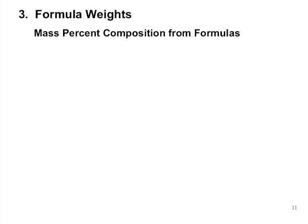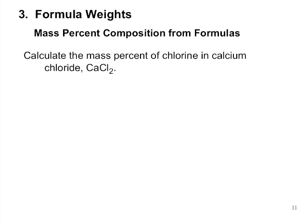So really all you need to know here is the concept of a fraction, in this case a mass fraction. Here you're asked to calculate the mass percent of chlorine in CaCl2 or calcium chloride. So if we look at our formula, we have three atoms, two elements, right?